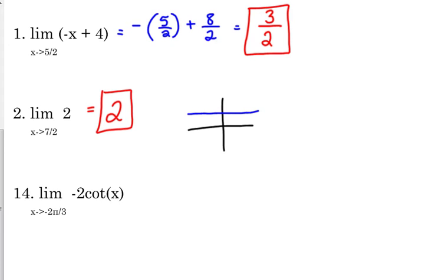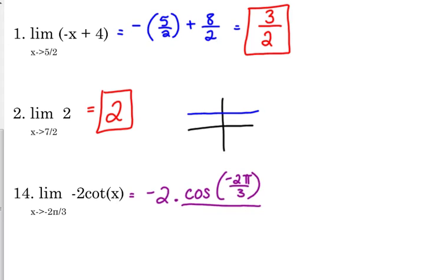Trig functions are very common questions on the exam. The limit as x approaches negative two pi over three of negative two cotangent of x — here's how I approach this. Keep the negative two in front; cotangent is cosine over sine, and you need to know that. So it's the cosine of negative two pi over three over the sine of negative two pi over three.